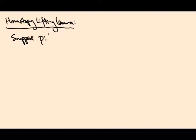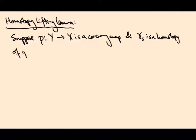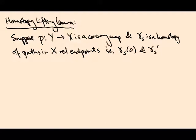So the homotopy lifting lemma: Suppose P is a covering map and gamma_s is a homotopy of paths in X, which is a homotopy rel endpoints. Remember this means they all start and end at the same point. So gamma_s(0) and gamma_s(1) are independent of s.